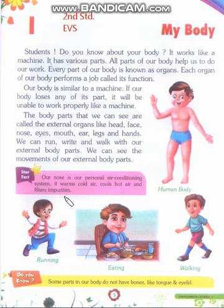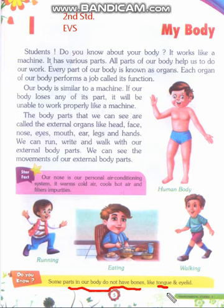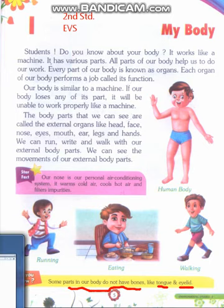Some parts of our body do not have bones. کئی parts ہیں ہماری body میں جن میں bones نہیں ہوتی۔ جیسے tongue — ہماری جو زبان ہے اس میں bone نہیں ہے۔ اور eyelids — جو eyelids ہیں ان میں بھی bone نہیں ہے۔ تو یہ وہ parts ہیں جن میں bones نہیں ہوتی۔